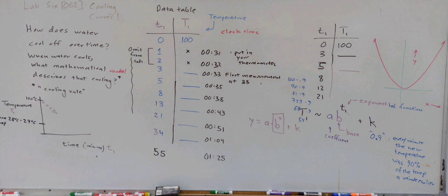On the right side of the board can be seen the exponential decay equation the students used to fit to their data. Capital T, temperature, is approximately equal to A times B raised to the lowercase t, time, plus a constant K.